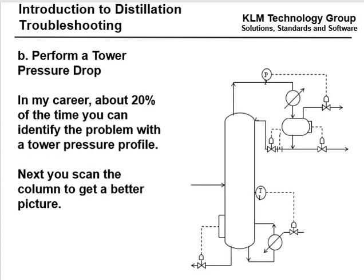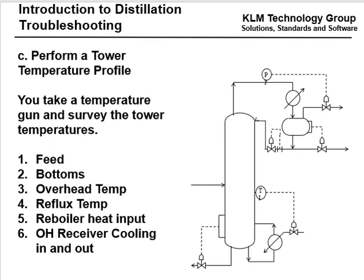Next, perform a tower temperature profile. You can take a temperature gun and survey the tower temperature. Look at the feed, bottoms, overhead temperature, reflux temperature, reboiler heat inlet, and the overhead receiver cooling water in and out. These are all things you can survey.